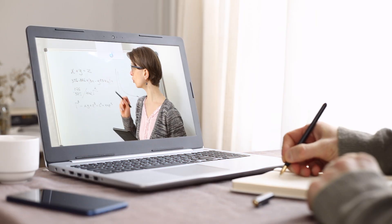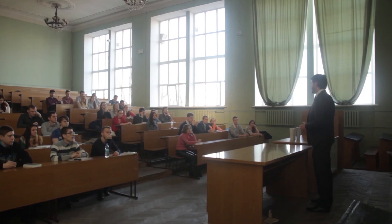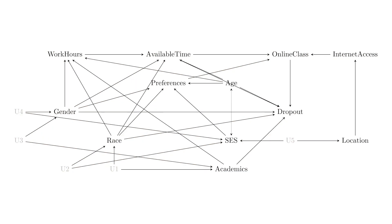In the last video we left ourselves with a big old mess. We had determined some of the variables that were important for understanding how taking an online course might cause you to stay in college longer or drop out. We had our list of variables, a bunch of ideas about which of those variables caused which others, and we got ourselves this causal diagram — and it is a big whole mess.